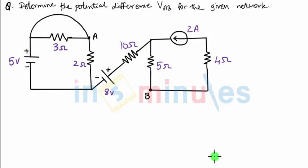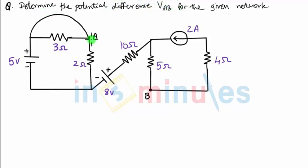Hello everyone, welcome to 'In 5 Minutes.' In this video clip we'll discuss one question in which we have to find out the potential difference between two points. The question asks us to determine the potential difference VAB for the given network, where A and B are the two points marked in this particular network.